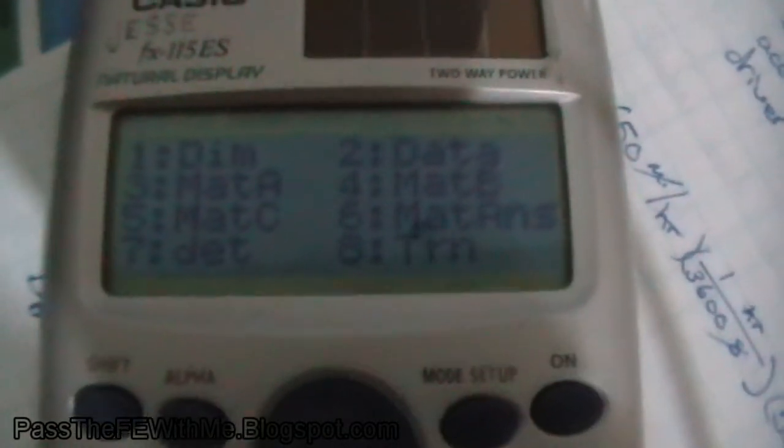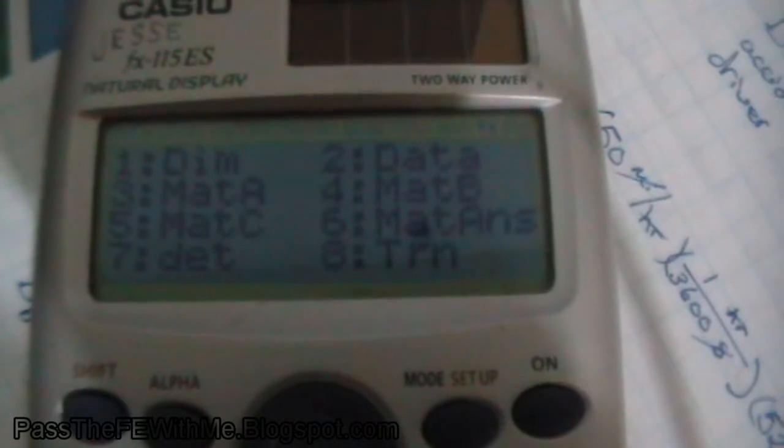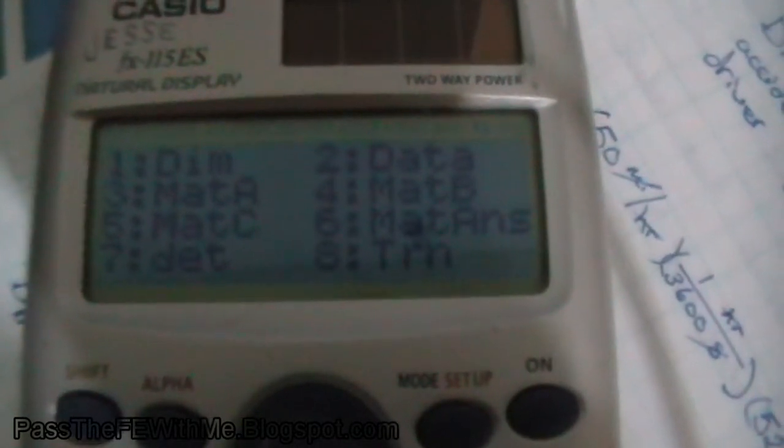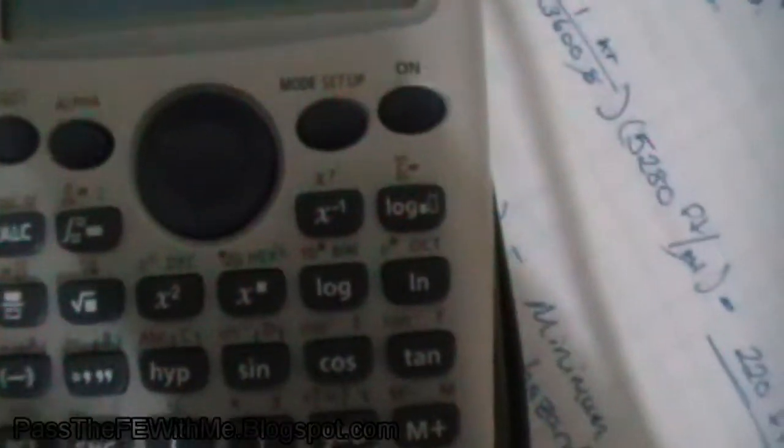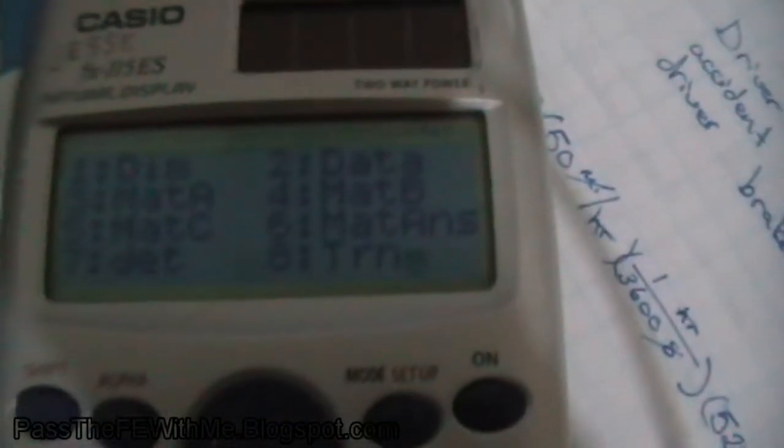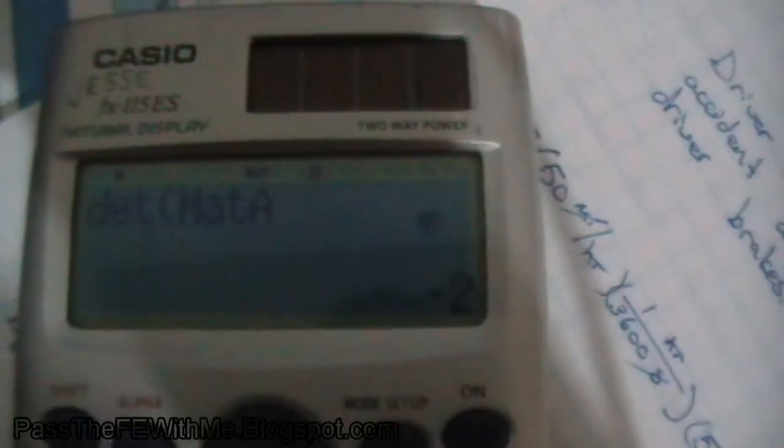So we're going to take a determinant so you can hit 7. As you can see there's other operations you can do that might help you out later, but we'll stick with the determinant for now. 7, okay, same thing again, shift, 4, brings you back to the screen, and we're talking about matrix A. So that puts the matrix you just created in there, equals button, and there we go. The determinant is negative 2.